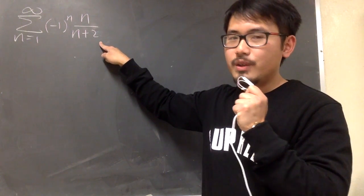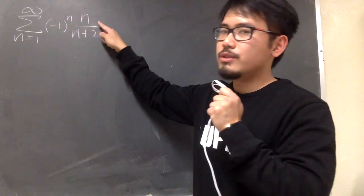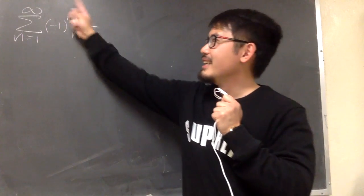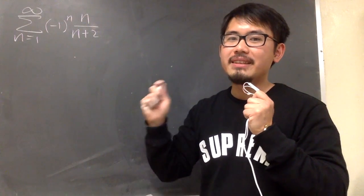As n goes to infinity, we know this part goes to 1, which is not 0. So we can show that this series, in fact, it diverges.